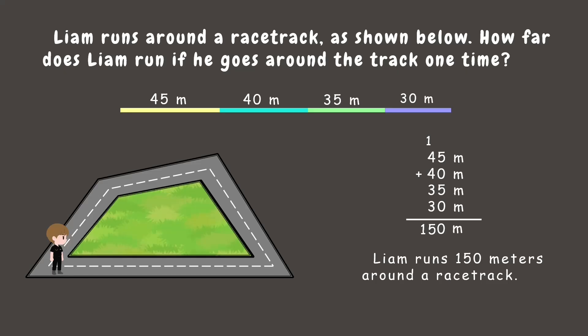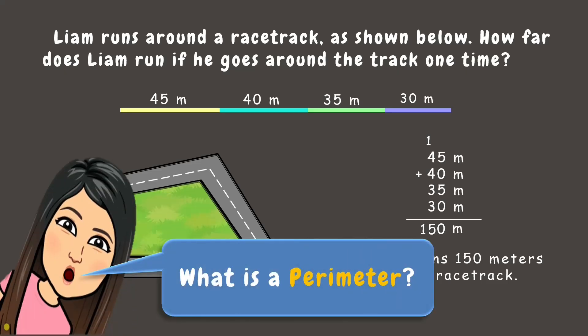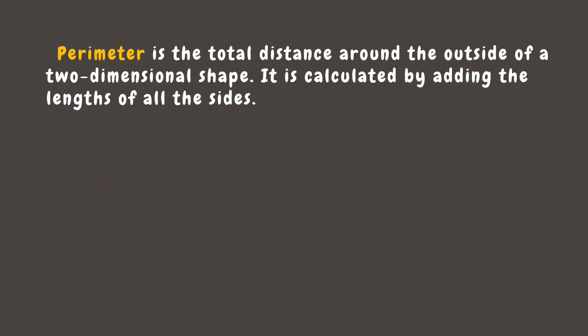Now, what exactly is a perimeter? Perimeter is the total distance around the outside of a two-dimensional shape. We find it by adding the lengths of all the sides together.